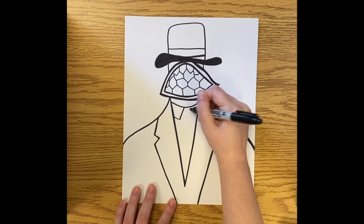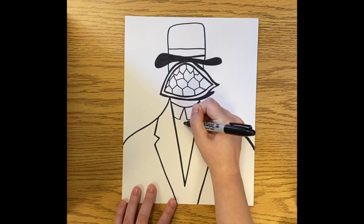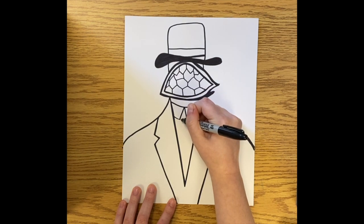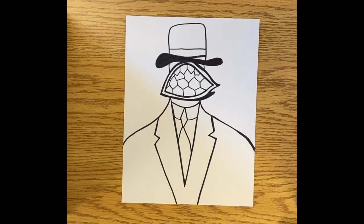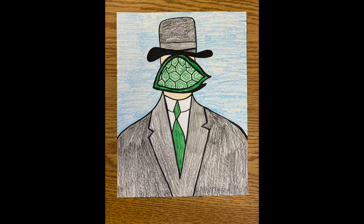And the last detail I'm adding is a tie under my shirt. And then I chose to color my picture in with crayons, but you can use whatever materials you have at home. And this is what my finished product looks like.